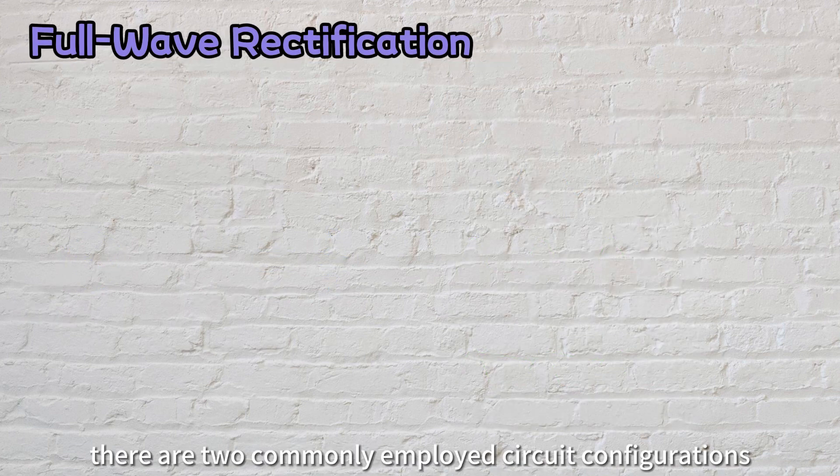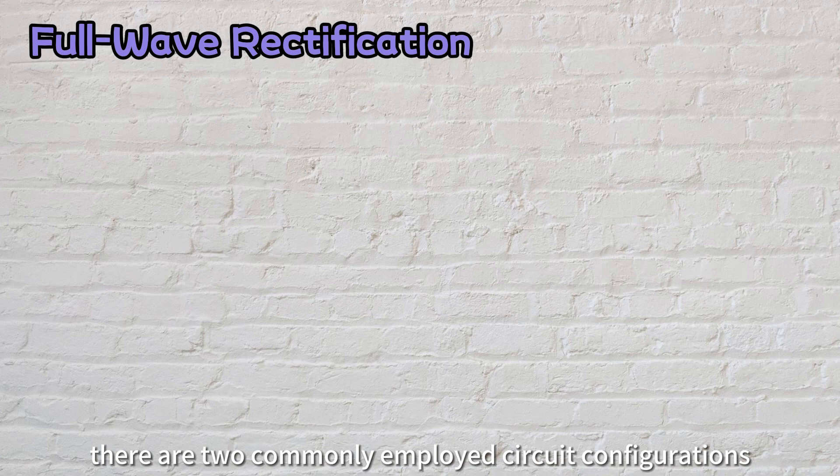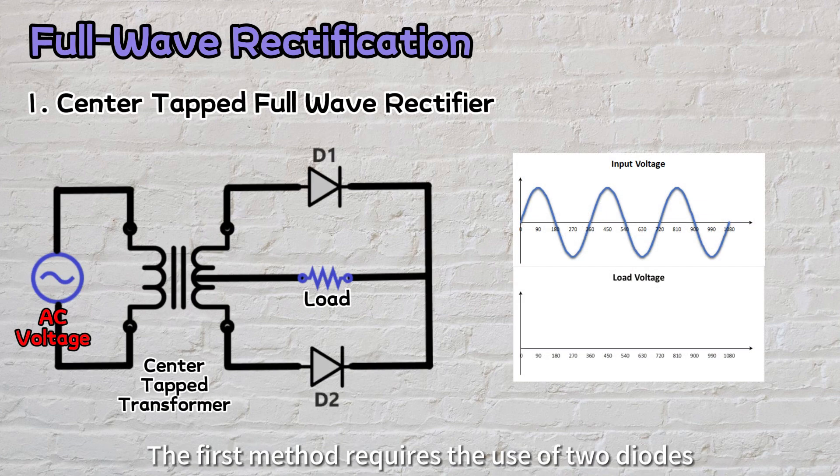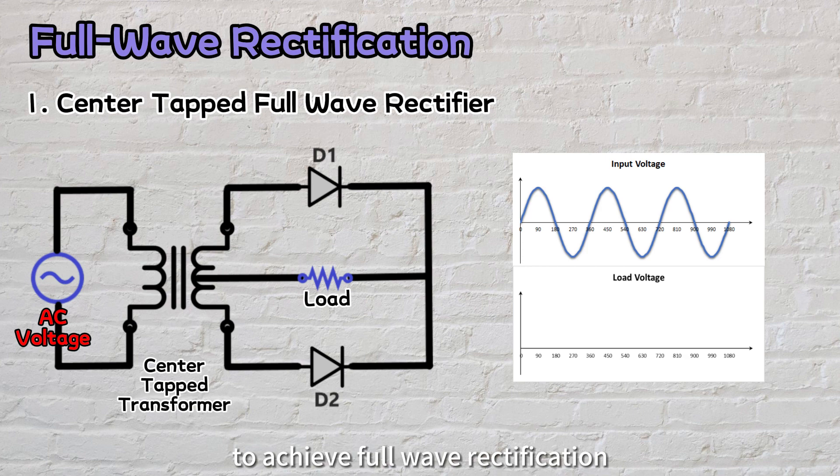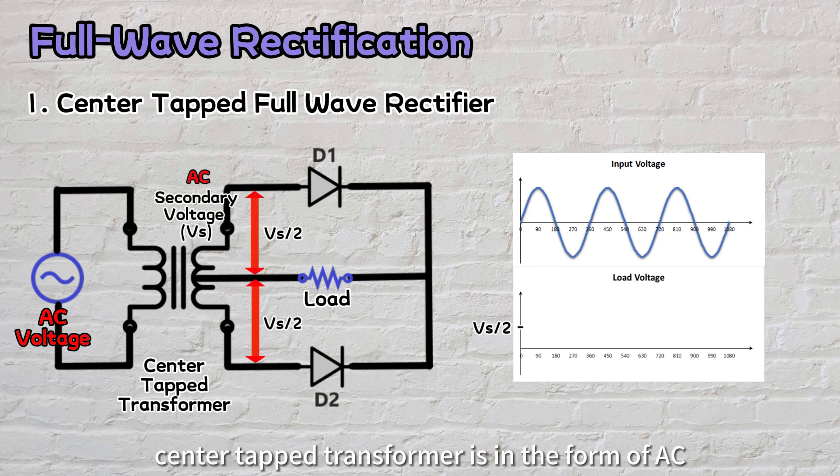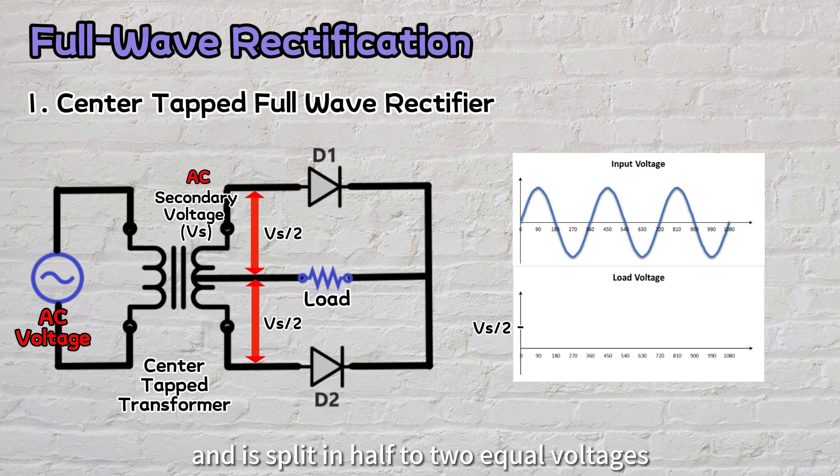In full-wave rectification, there are two commonly employed circuit configurations. The first method requires the use of two diodes, D1 and D2, together with a center-tap transformer to achieve full-wave rectification. It's important to note that the secondary voltage from the center-tap transformer is in the form of AC and is split in half to two equal voltages.